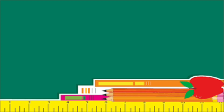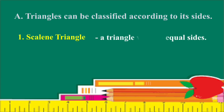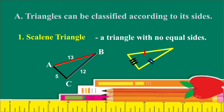Triangles can be classified according to the measure of the sides. The first one is the Scalene Triangle — a triangle with no equal sides. For example, triangle ABC where AB is 13 units, BC is 12 units, and AC is 5 units, so it is a Scalene Triangle. Some figures are illustrated with first, second, and third markings on the sides.